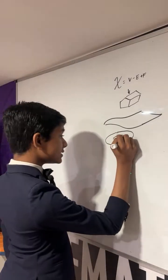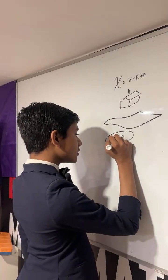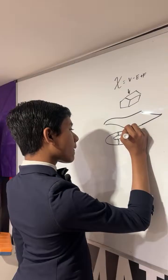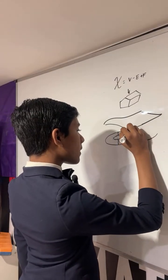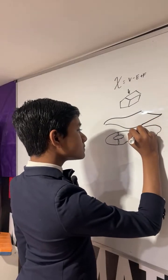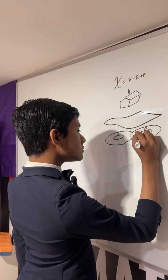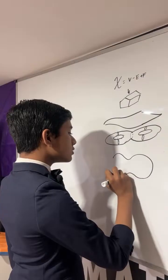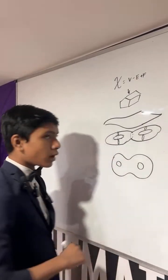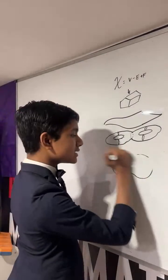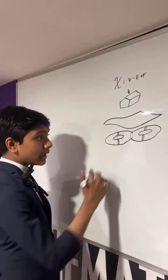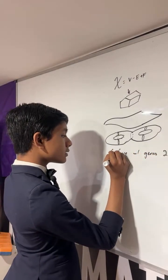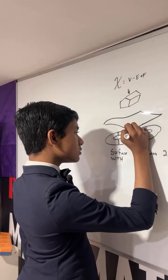It looks like a torus, but here's the twist — that's not the surface we're analyzing. The surface we're analyzing looks like one of those two-sided spinner shapes. To be formal, we're analyzing a double torus, or surface of genus 2, with a disk removed.